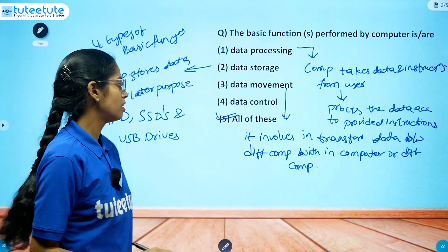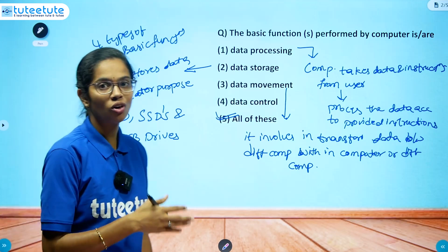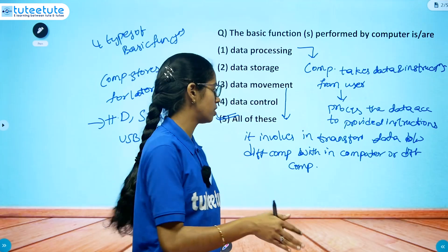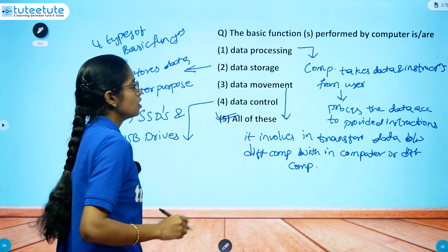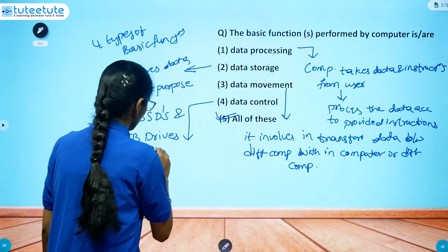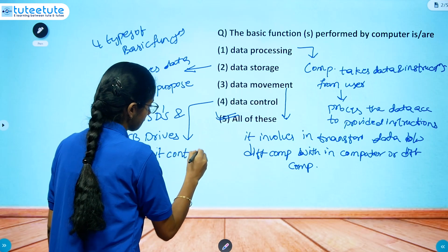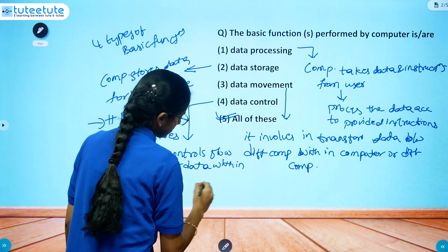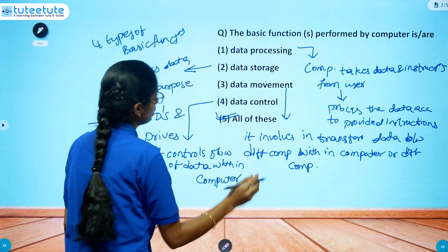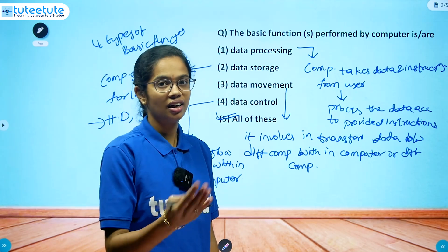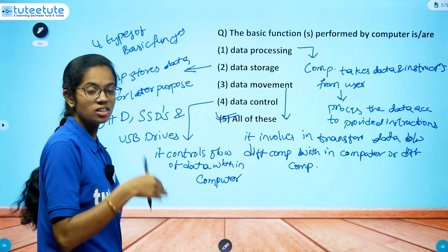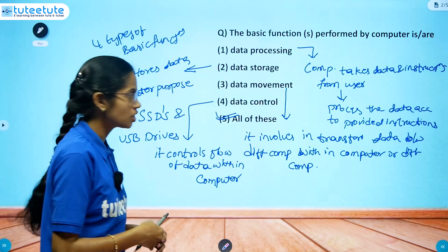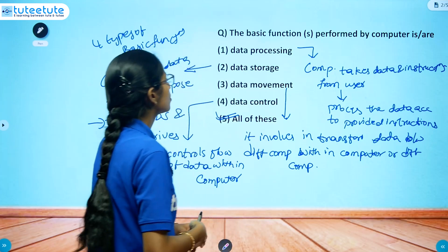Data movement involves transferring data between different components within the computer or between computers. Next, data control: the function of data control is that it controls the flow of data within the computer. So these are the four basic functions of the computer — data processing, data storage, data movement, and data control. The answer is all of these.